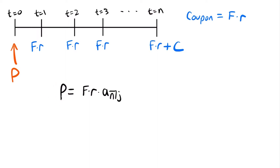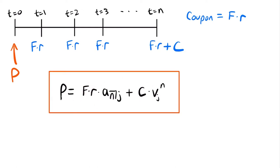We've calculated the present value of coupon payments, but we still need to account for the redemption value C paid at time n. Since it's a one-time payment at time n, we add C times the present value factor to the power of n at yield rate j, bringing it back to time zero. We add a subscript j to remind us that this present value factor uses the yield rate, not the coupon rate. This completes the price formula for a bond.